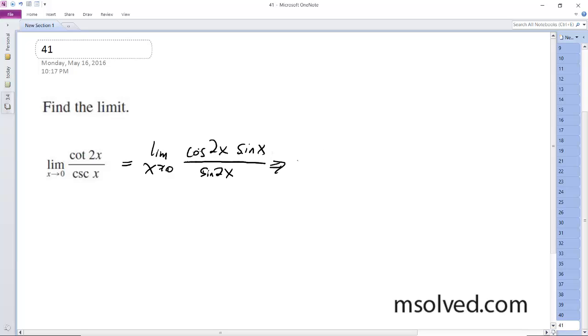All right, so moving this further, limit as x approaches 0, we can move this out, and then we have sine of x over x,